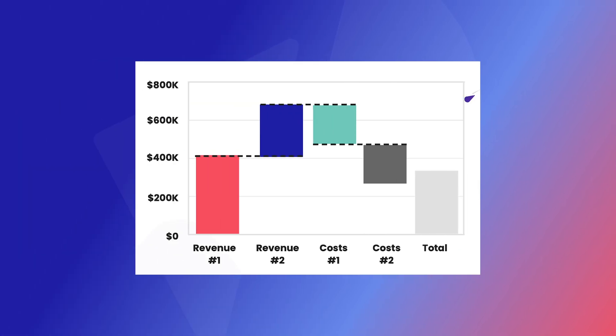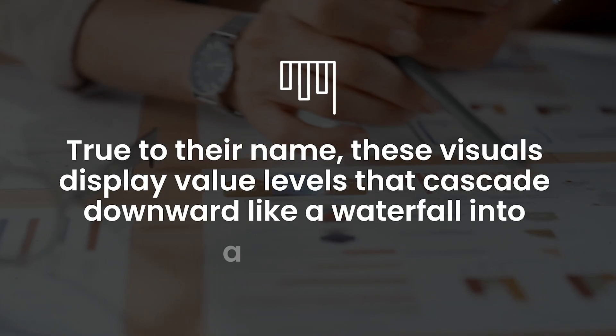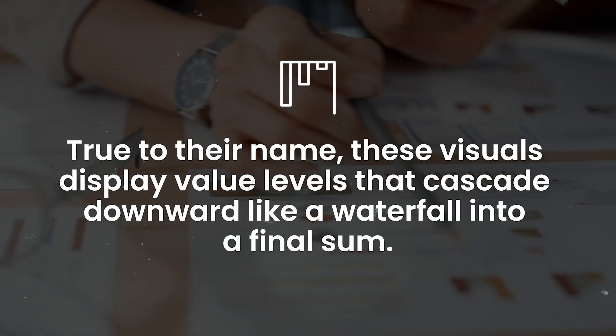Moving on to another great option: if you need to showcase how a bunch of positives and negatives compile into a final total, that's what waterfall charts are for. True to their name, these visuals display value levels that cascade downward like a waterfall into a final sum. Step by step, you can visualize the what and the how behind the total metric ticking up or down.